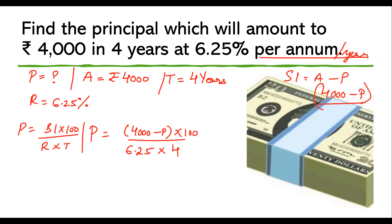Let's simplify. Four gets cancelled with four giving 25, and 100 goes up. Then 25 and 625 can be cut - 25 ones are 25, 25 fours are 100. The equation becomes P = (4,000 - P) × 4, which gives P = 16,000 - 4P.